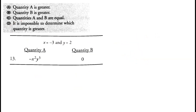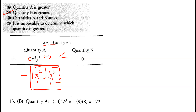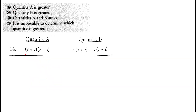Next: minus x squared and y cubed. If x is minus 3, x squared is positive, but with the negative sign the whole term is negative. Quantity A is always negative, and a negative number is less than zero. Quantity B is zero, so quantity B is greater than quantity A. Option B is correct.